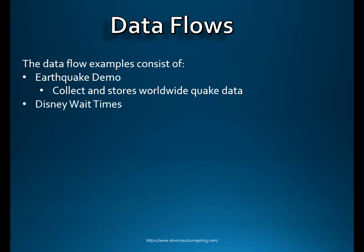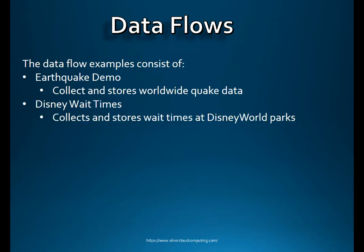Another flow I put together I call the Disney Wait Times. This flow goes out to the Disney website — there's a Disney API — and queries the Disney database for the wait times for all its current attractions. For this particular flow I had to write a custom processor to talk to the Disney website. All this information is collected and stored into a database. The parks I use are the ones in Disney World. This flow goes out every five minutes between 9 a.m. and 10 p.m. — there's no sense going out at 3 in the morning when the parks are closed. It's just another feature where you can fine-tune how often you collect data and during what time period.